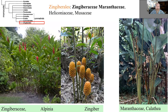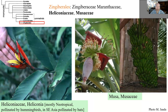Zingiberales — gingers. We have Alpinia, then ginger proper, then Marantaceae/Calathea — they look like this physiognomically. And then we have Heliconias, mostly neotropical but not exclusively — typically pollinated by hummingbirds in the neotropics and then by bats in Southeast Asia. And then we have Musaceae, Musa bananas.